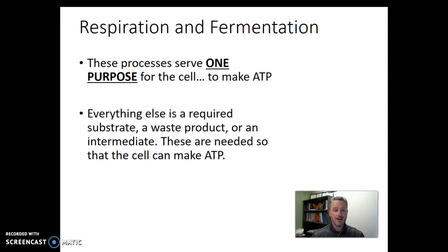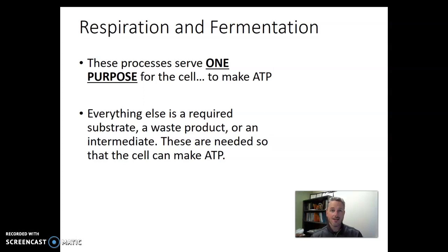Everything else that is involved in those processes — all the chemicals — they are simply substrates, waste products, or some sort of intermediate. Their purpose in the process is to allow the cell to make ATP. So let's just not lose track of ATP being the most important product of these processes.